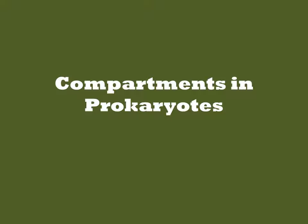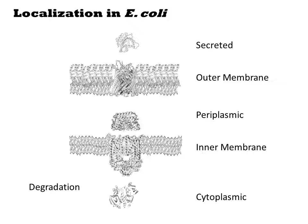Localization processes exist in all cells and affect where your protein ends up after translation. Placing proteins in different parts of the cell is a common activity in genetic engineering. There are five readily distinguishable compartments in a gram-negative bacterium such as E. coli, defined by the presence of contiguous bilayer membranes that prevent the free exchange of biomolecules.